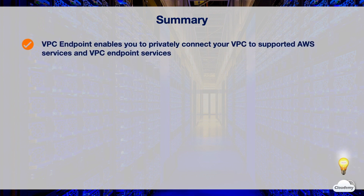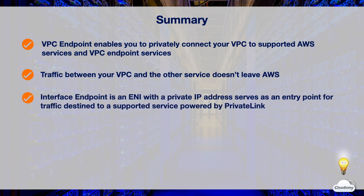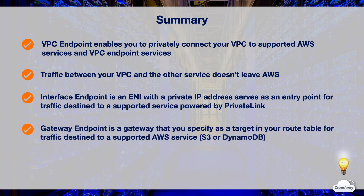In this episode, we've learned about VPC endpoints. A VPC endpoint enables you to privately connect your VPC to supported AWS services without requiring an internet gateway, NAT device, or virtual private gateway. There are two types: interface endpoints, which are ENIs with private IP addresses powered by AWS PrivateLink, and gateway endpoints, which are gateways specified as targets in your route table. Only Amazon S3 and DynamoDB are supported by gateway endpoints.